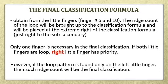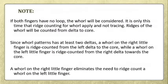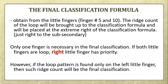However, if the loop pattern is found only on the left little finger, then that ridge count will be the final classification. Take note: if you classify the right little finger or finger number 5, the final classification is located at the numerator side of the classification line. If you classify the left little finger, then the final classification will be brought to the denominator side.